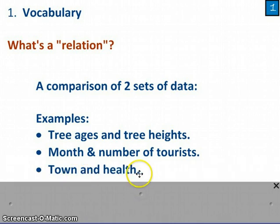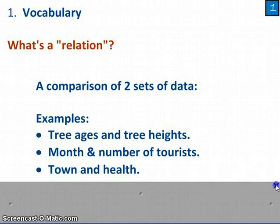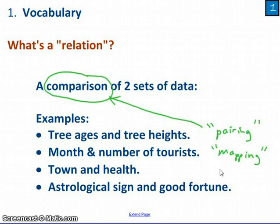Town and health. Maybe you're doing a study comparing different towns, and you think that health statistics might vary depending on the town you're looking at. Or you might even think that your astrological sign or a person's astrological sign has some sort of relation with their good fortune. Now, the textbook substitutes a different word, two different words for comparison. It uses the word pairing, like a pair of two items, or a mapping of sets of data. And we'll get into these terms, and I hope they're clearer as we go along with the video.